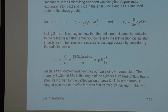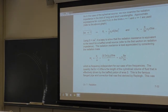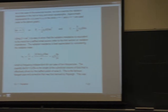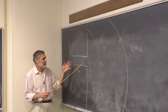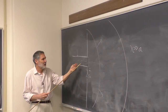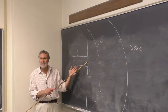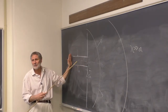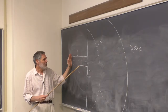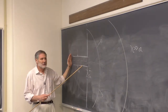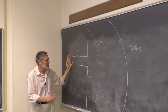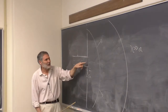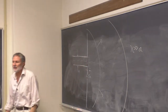We'll encounter the end correction later in the course when looking at pipe resonance. At an open end there is typically a large impedance mismatch, producing strong reflections and standing waves inside the pipe. When computing the resonant frequency, you need to add the end correction to the physical pipe length.